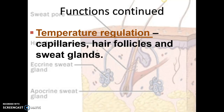On the converse, when it's cool outside and you don't want to lose that heat, those superficial muscles close and restrict those superficial blood vessels. The blood is not brought to the surface as much, more heat is kept in, and you look more pale when it's cool out.